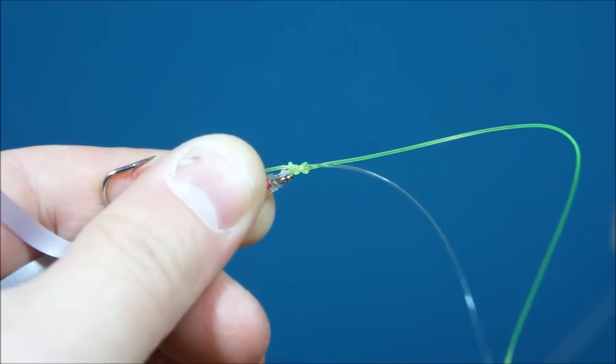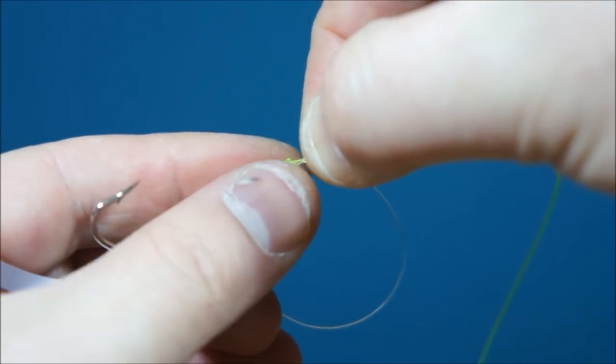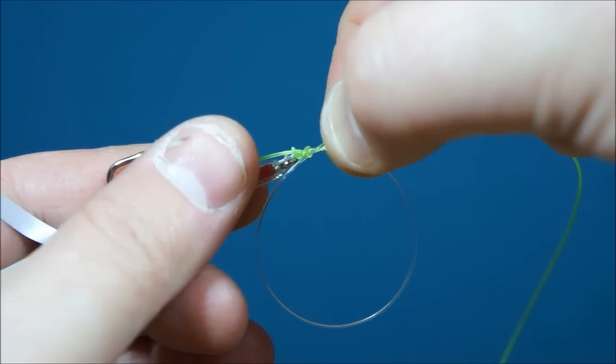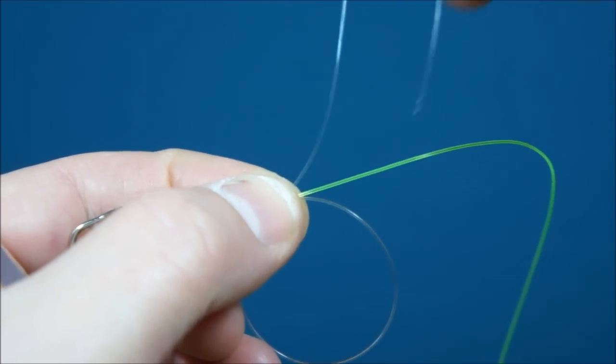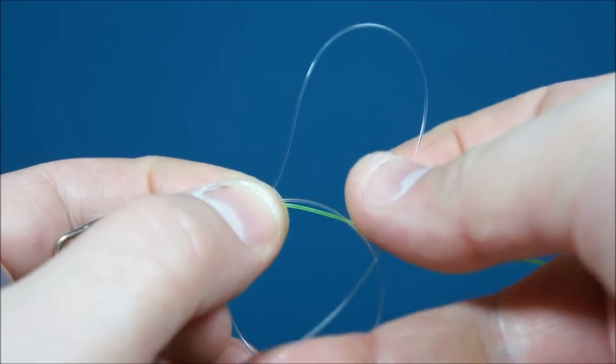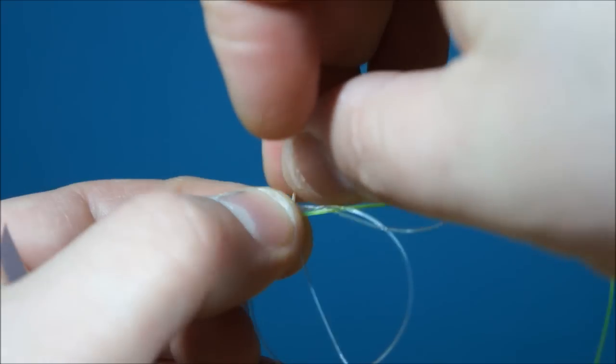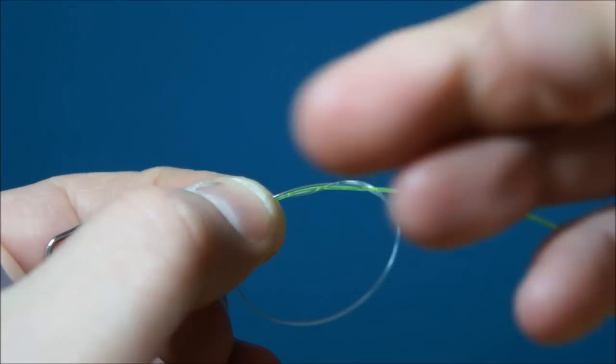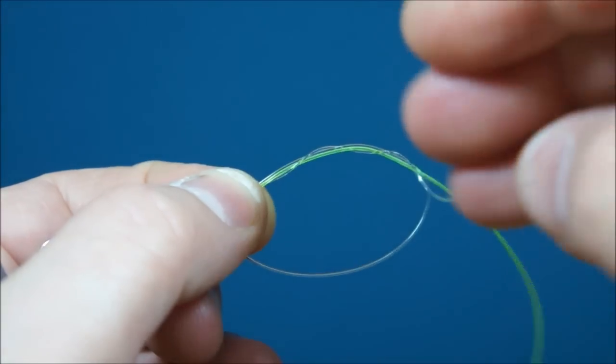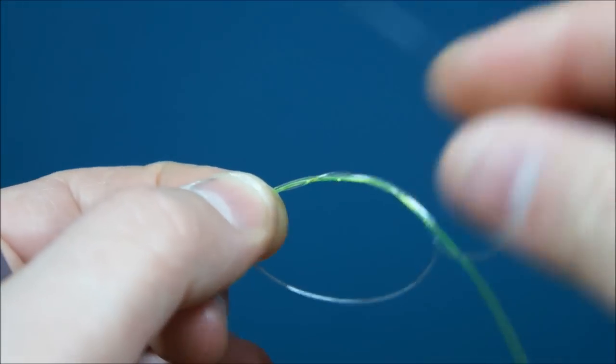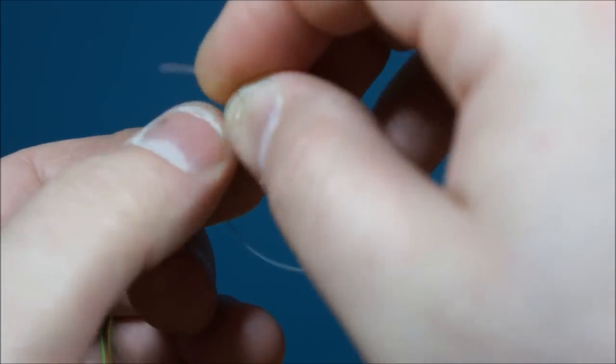And now with my snood line I'm going to make a loop. It's going to be between about 25mm and 30mm, so about an inch to inch and a quarter. And then I'm going to tie a uni knot. And that means taking the end of my snood round, wrapping it around the main line and the loop. One. Two. Three. Four times.